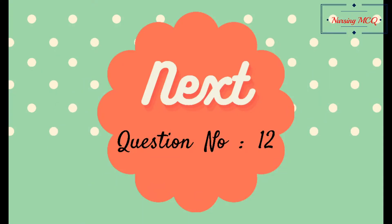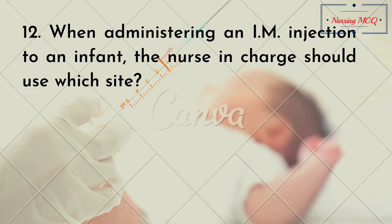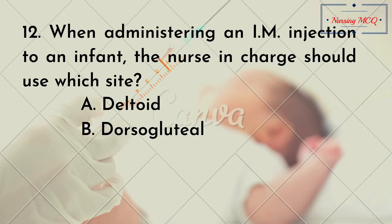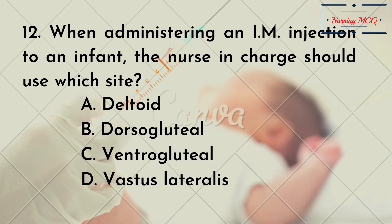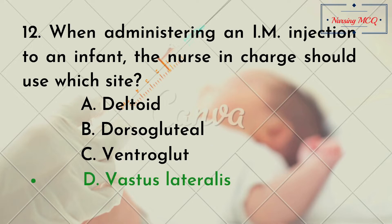Question number 12. When administering an intramuscular injection to an infant, the nurse should use which site? Option A, deltoid; Option B, dorsogluteal; Option C, ventrogluteal; Option D, vastus lateralis. The right answer is Option D: vastus lateralis.